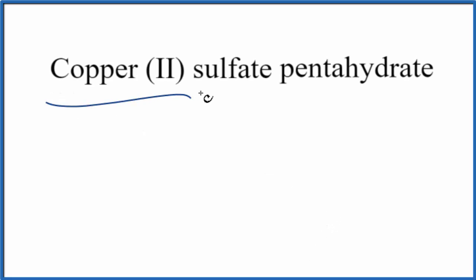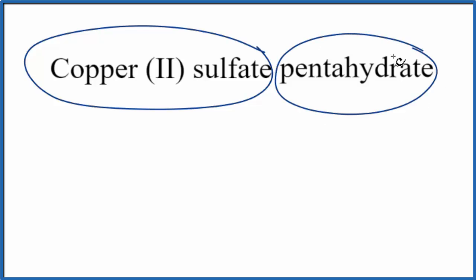To write the formula for copper sulfate pentahydrate, let's split this into two things. First we'll do the copper sulfate, and then we'll add the pentahydrate.